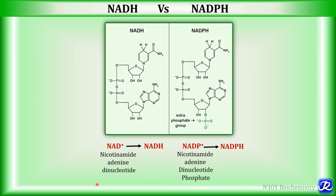NADH and NADPH are two different molecules, so do not get confused between them. NADH is the reduced form of NAD+, and NADPH is the reduced form of NADP+. NAD+ stands for nicotinamide adenine dinucleotide, and NADP contains nicotinamide adenine dinucleotide phosphate — the extra group is the phosphate group. Both NAD+ and NADP+ are derived from the vitamin niacin.